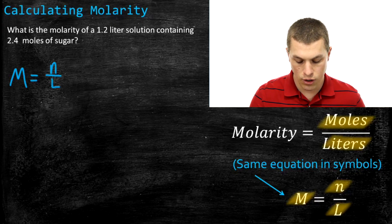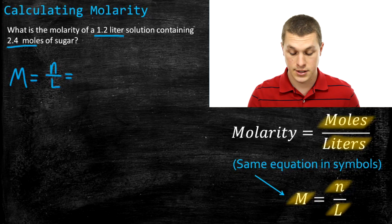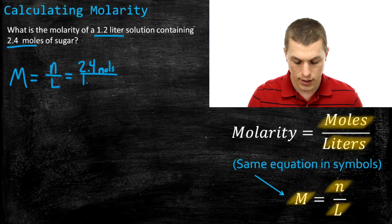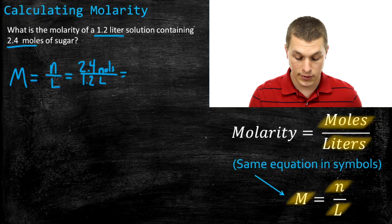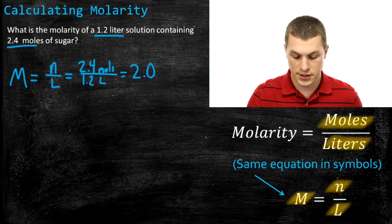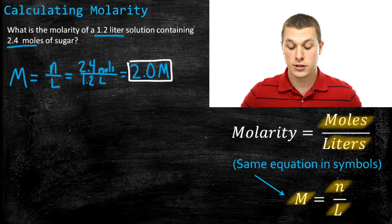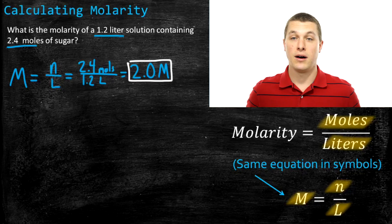So M = N/L. Since we're given our volume in liters and our quantity of sugar in moles, we plug in directly: 2.4 moles on top and 1.2 liters on the bottom. Our units are all set. When we divide, we get 2.0, and the units for molarity are written as a capital M. So we can say the sugar solution has a concentration of 2 molar. That's how we calculate molarity.